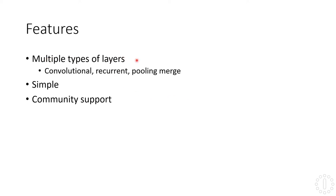First, we have multiple types of layers. scikit-learn only offers dense layers that are fully connected and it only offers feedforward neural networks, while with Keras we can create convolutional neural networks or use convolutional layers, recurrent layers, pooling layers, merge layers, and many others.